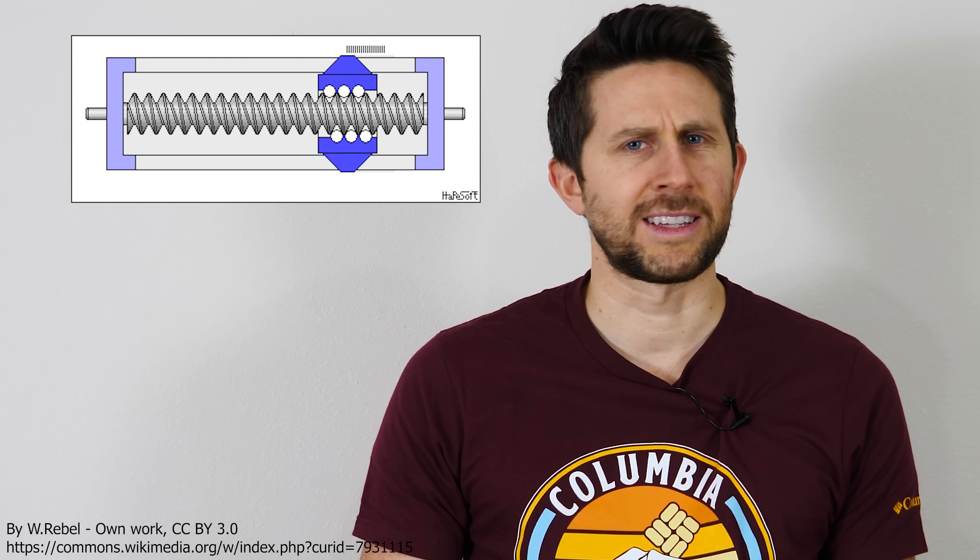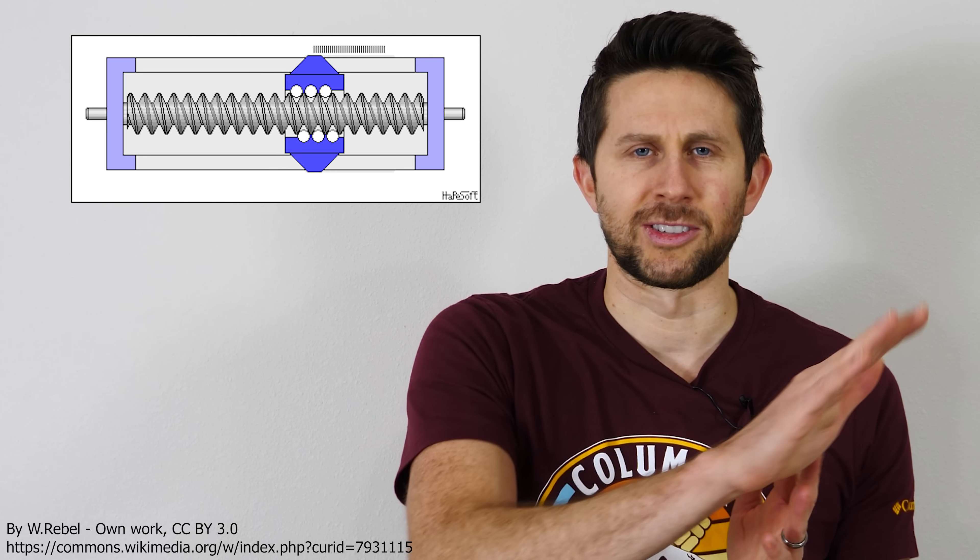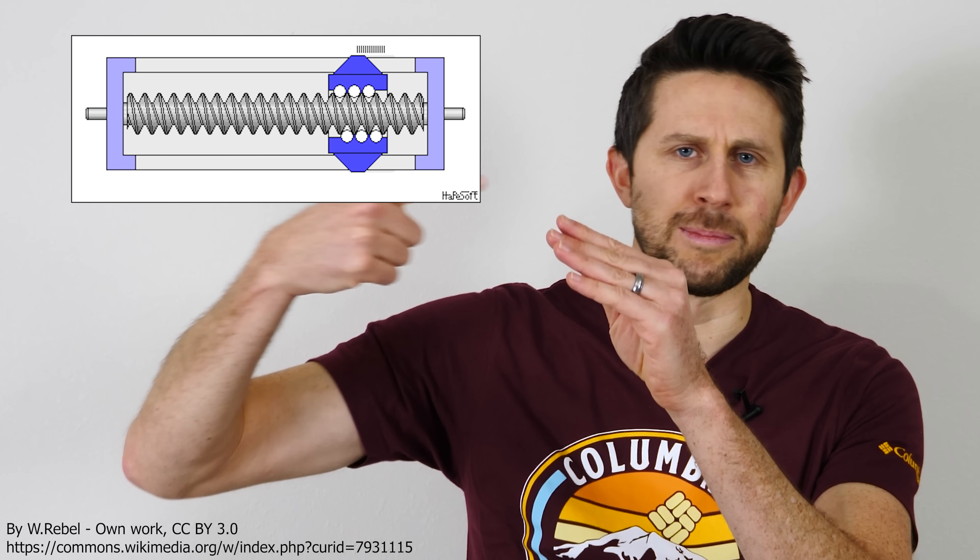Now even though we use screws every day, they're actually pretty interesting. They're one of the six basic simple machines. What's cool about a screw is that first it takes rotational motion and turns it into linear motion. So you turn the screw but it moves linearly.